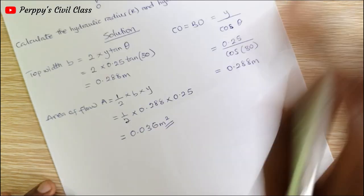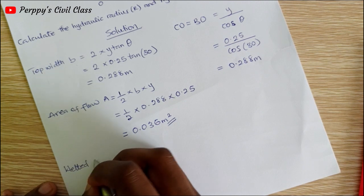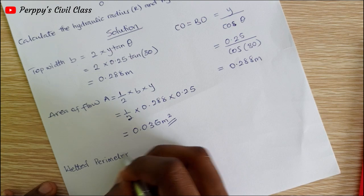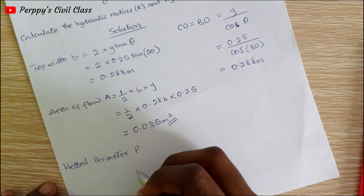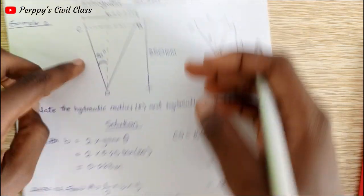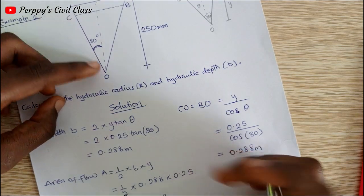Now we calculate for our wetted perimeter. Wetted perimeter P is equal to the perimeter around our triangle.